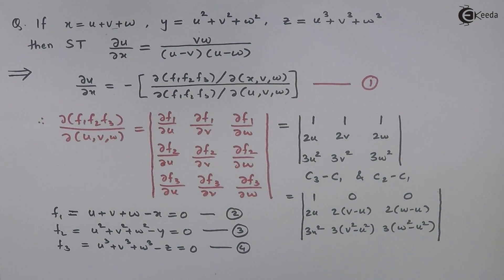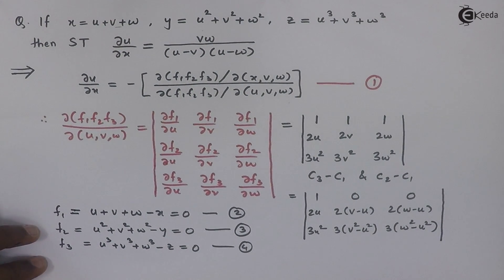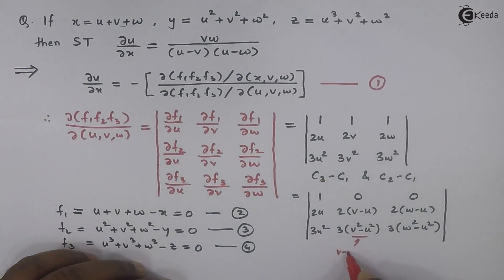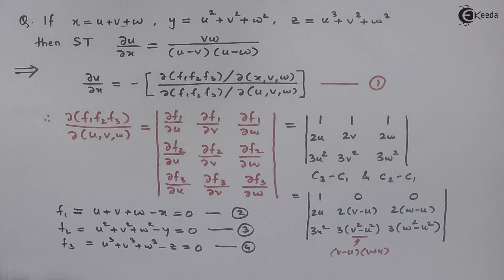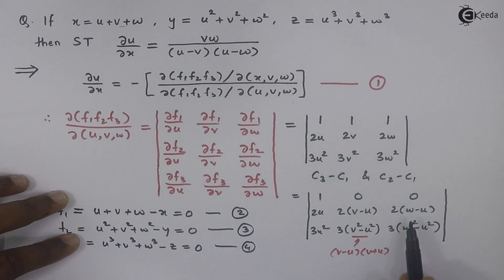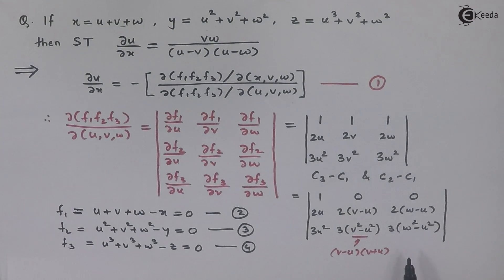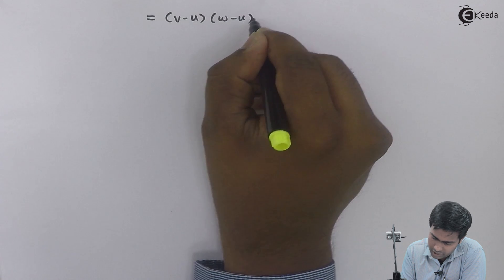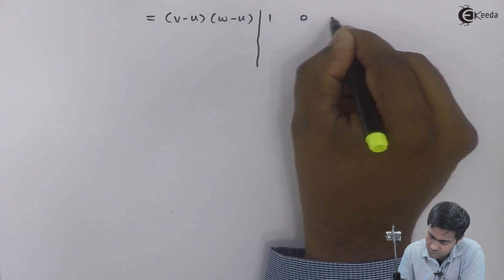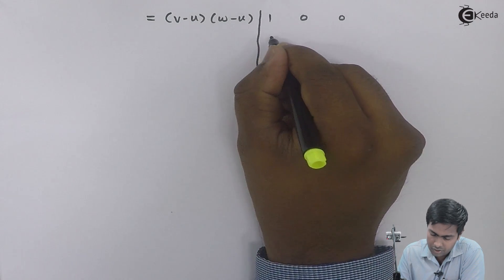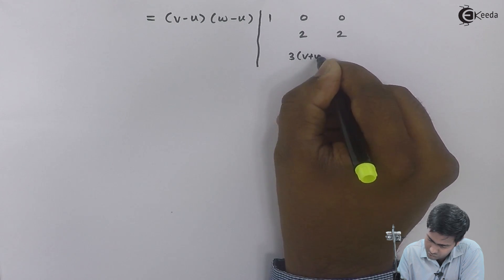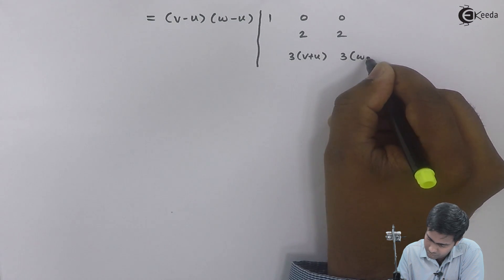We'll take common terms outside the determinant. From the second column we can apply the factorization and take (v − u) common; from the third column we take (w − u) common. This gives us (v − u)(w − u) outside the determinant, and inside the determinant we get 1, 0, 0 in the first row, then 2, and in the third row 3(v + u) and 3(w + u).